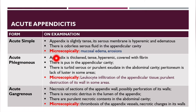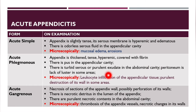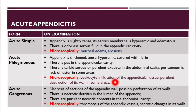In acute phlegmonous appendicitis, the appendix is thickened, tense, hyperemic, and covered with fibrin. There is pus in the appendicular cavity and turbid serous or purulent exudate in the abdominal cavity. The peritoneum lacks luster in some areas. Microscopically, there is leukocyte infiltration and purulent destruction of the walls.